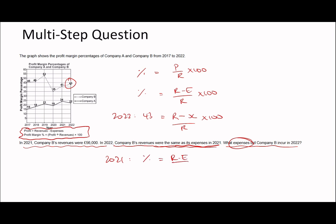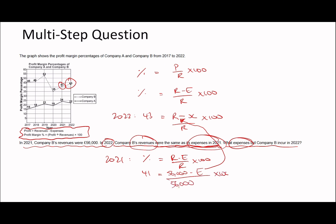We have to set up the exact same equation for 2021. Percentage equals revenue minus expenses over revenue times 100. For 2021 the percentage is 41, the revenue is 56,000, and expenses — what we're trying to work out — is E. That E is exactly the same as the revenue for 2022, because it says in 2022 company B's revenues were the same as the expenses in 2021.